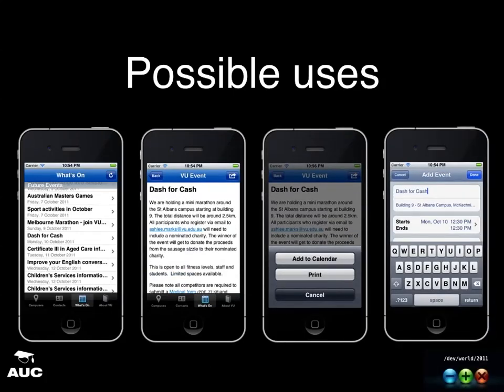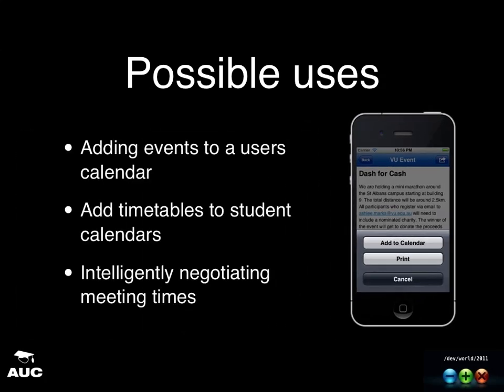We have a server which serves our events. We download them, let the user click on one, and if they're interested they can hit 'add to my calendar' and it inserts it into the user's calendar. You could also use it to sync a student's timetable, or for a careers counsellor app to look up calendar availability and suggest meeting times — something kind of intelligent.